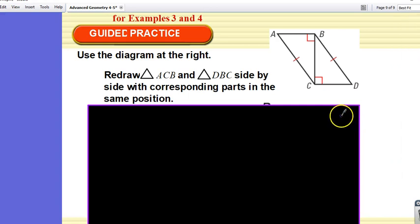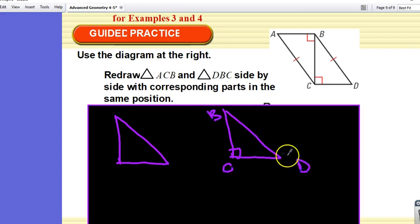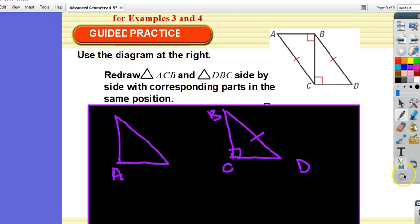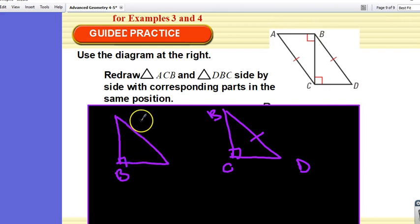Alright, so redraw triangle ACB and triangle DBC side by side with corresponding parts in the same position. Alright, so we have two right triangles. CBD, and the other one was A, your right angle. My right angle was at B, right? The C is the top, and the A goes here. Right? And this had that. So I kind of just turned this over. Make sense? So that they both are in the same positions. Alright, so then, what do they want us to do? They just want us to redraw it?